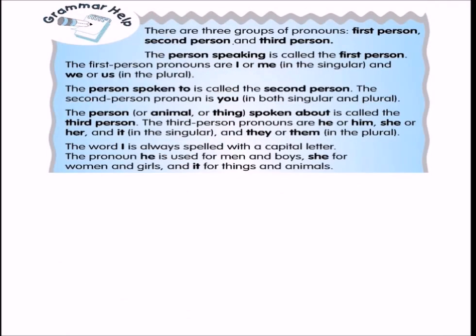There are three groups of pronouns. First person: the person speaking. The first person pronouns are 'I' and 'me' in singular, and 'we' and 'us' in plural.